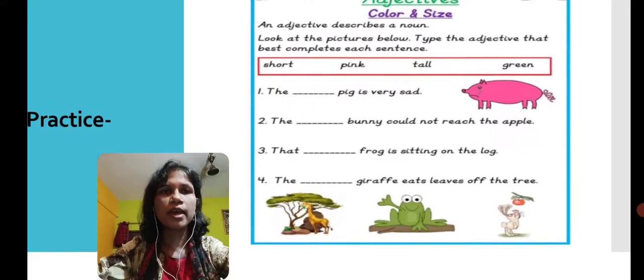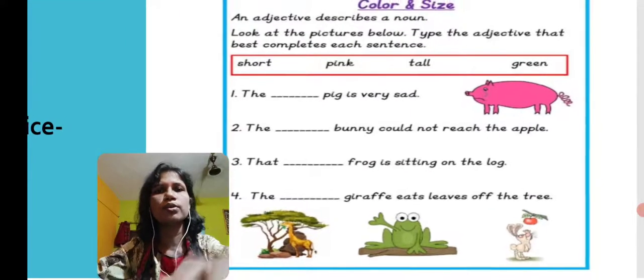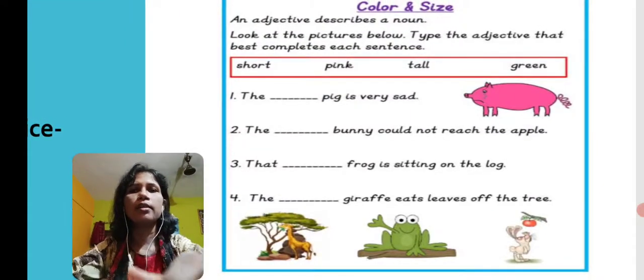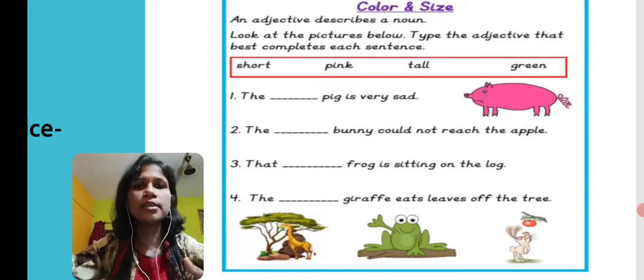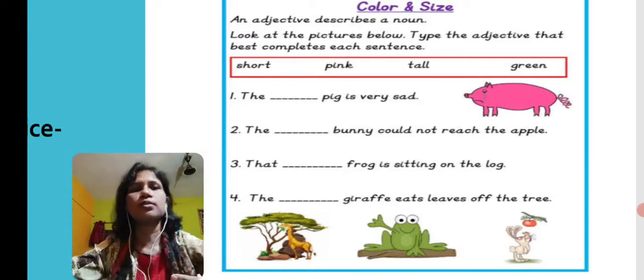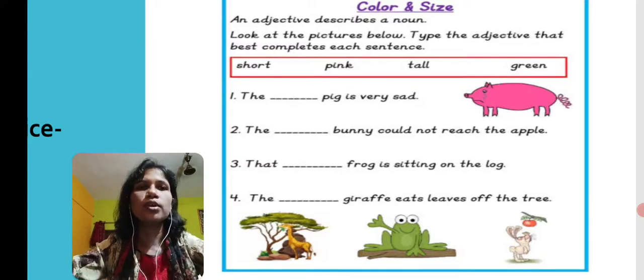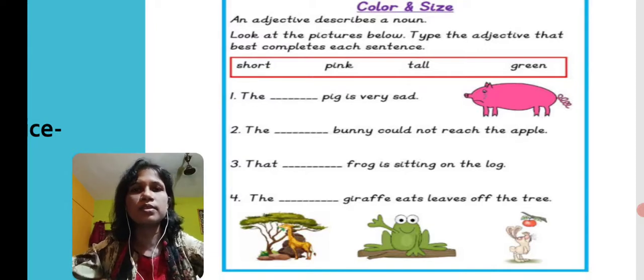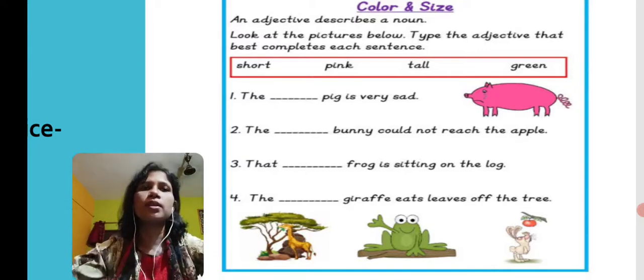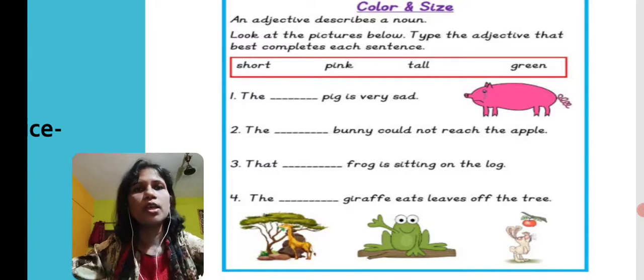Now students, for practice here I have shared a worksheet for you, so that you can understand more and practice what we have understood. Here you can see some of the adjectives mentioned in the red color box: short, pink, tall and green. Let us start the exercises.